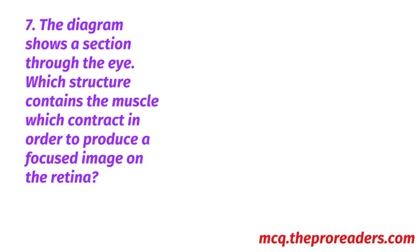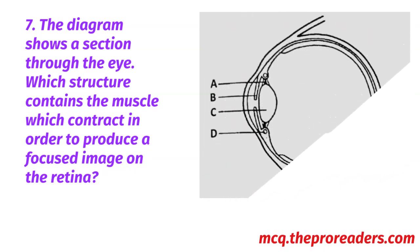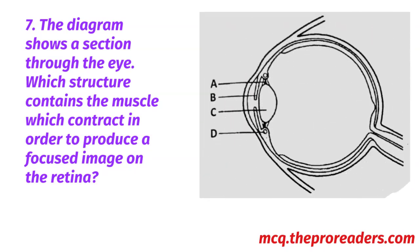The diagram shows a section through the eye. Which structure contains the muscle which contracts in order to produce a focused image on the retina? Options A, B, C, D. Option D is the correct answer.